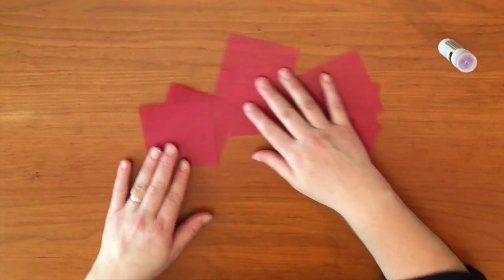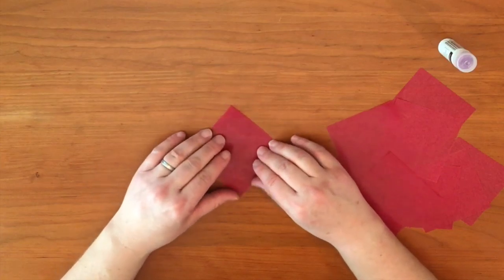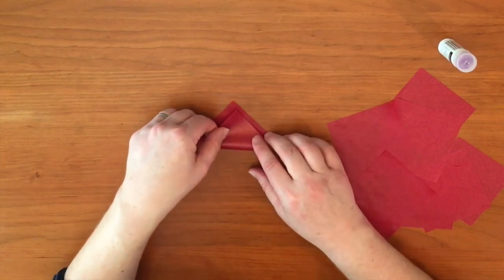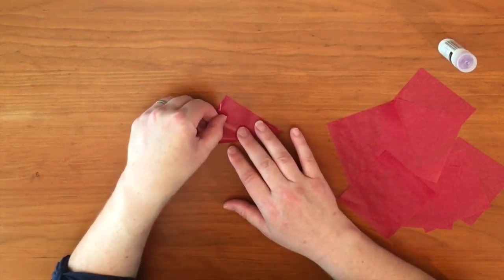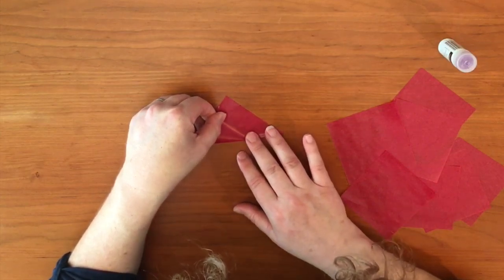To begin, I'm going to start with one piece of red kite paper, and I'm going to fold it in half on the diagonal, just like we did with our eight pointed star.